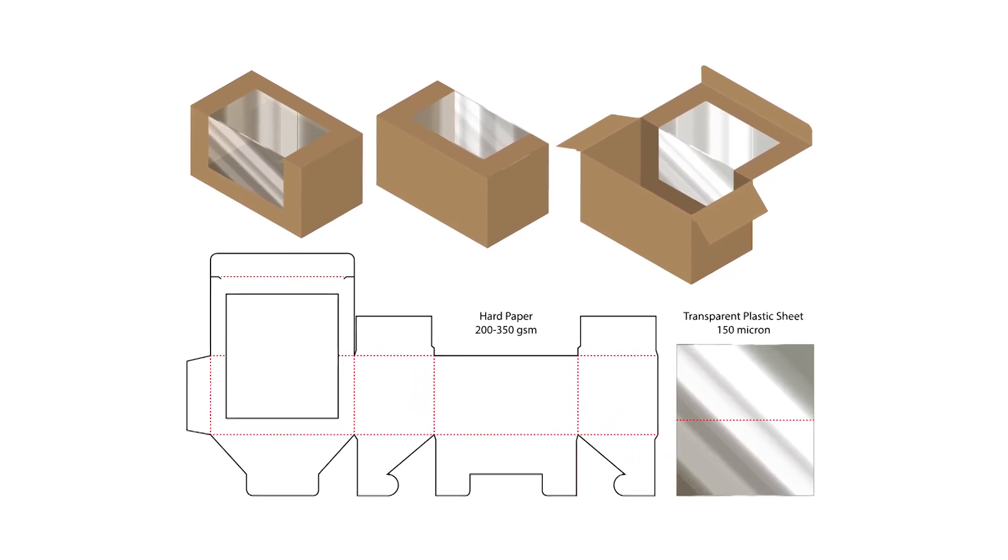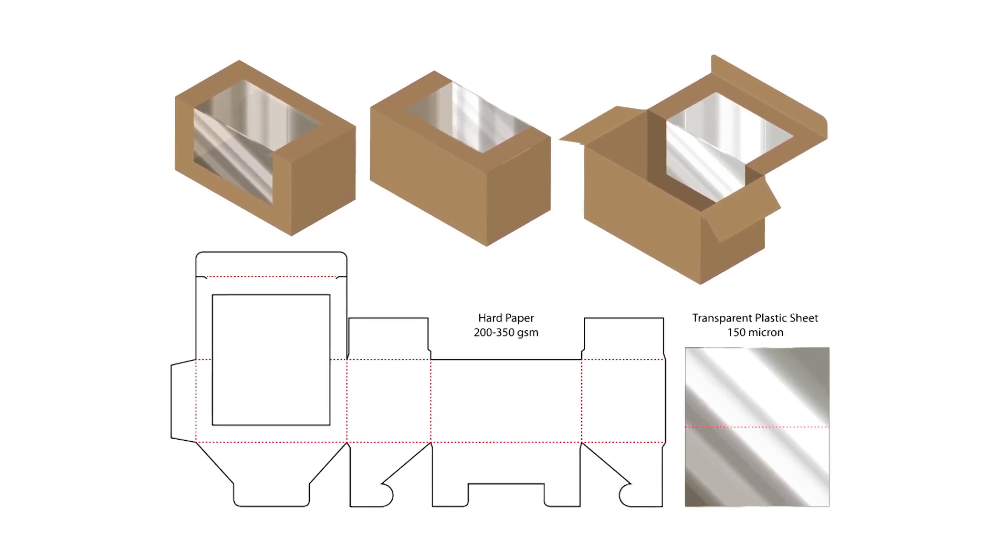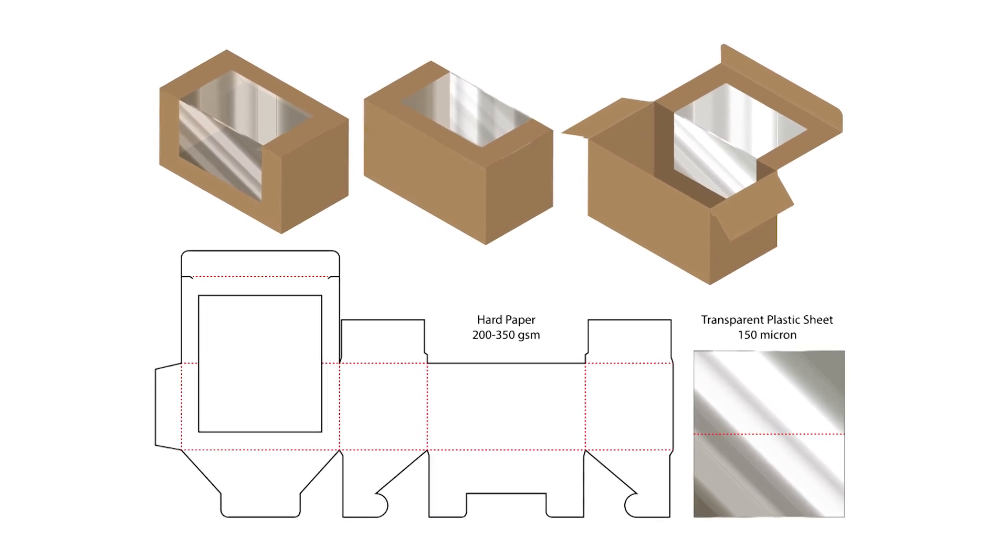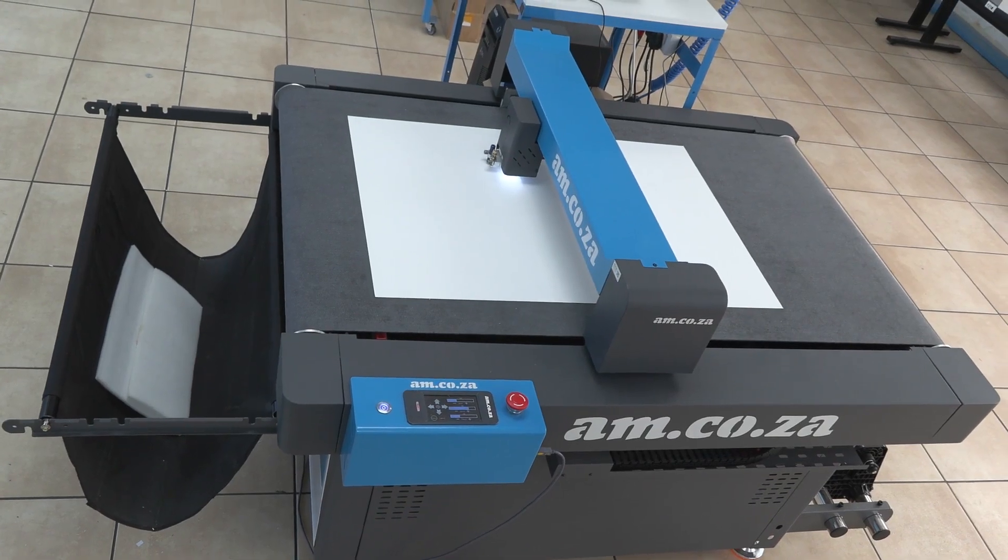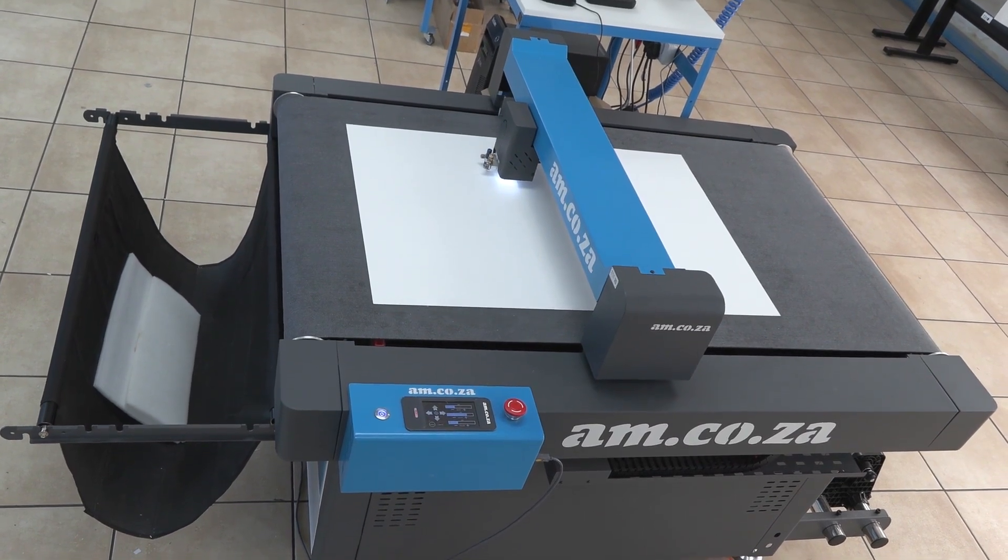This is a nice box design, made of cardboard and 200 micron transparent plastic. Let's see how the flatbed vinyl cutter from am.co.za handles it.